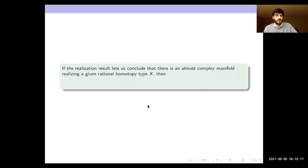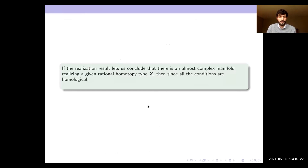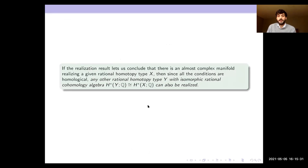If this realization result lets us conclude that there is a closed almost complex manifold realizing a given rational homotopy type, then all the conditions were homological. This means if you take any other rational homotopy type with the same rational cohomology, that rational homotopy type can also be realized by a closed almost complex manifold — which was that earlier discussion of Kähler versus almost complex.